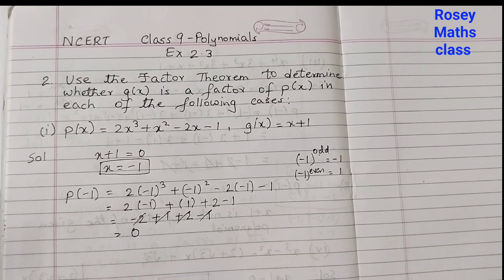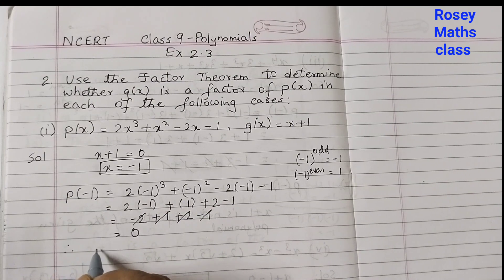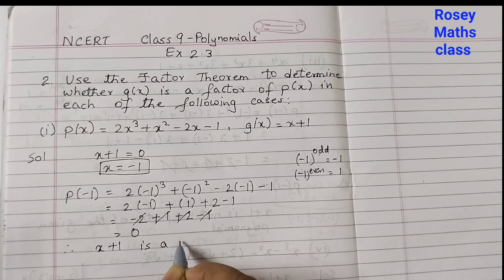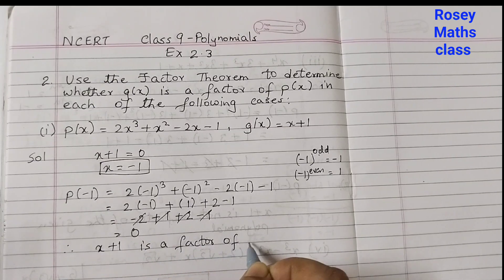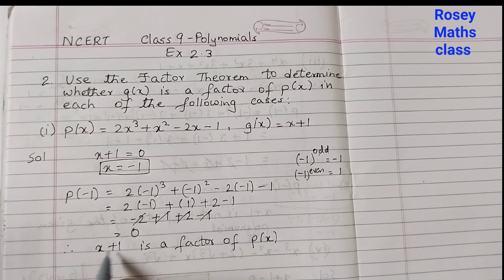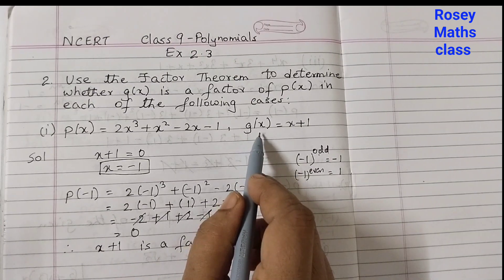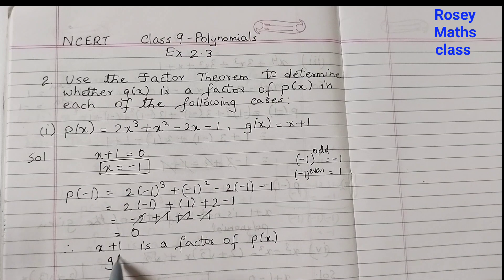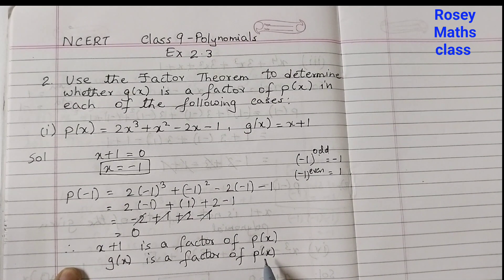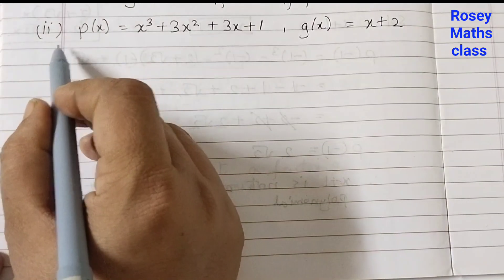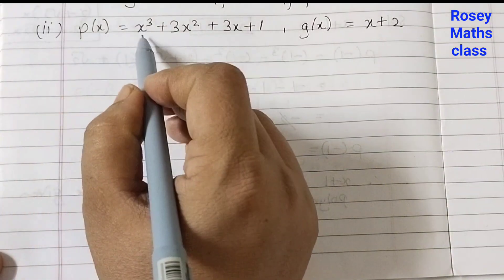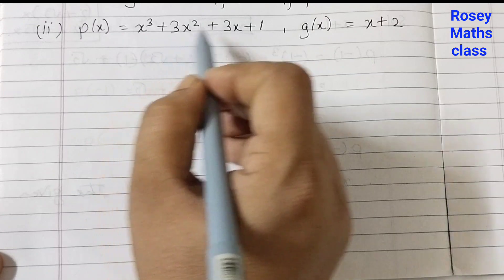The answer is 0. Since we are getting 0 at the end, therefore x + 1 — or g(x) — is a factor of p(x). This was part 1. Let's do part 2 now.